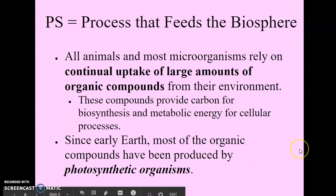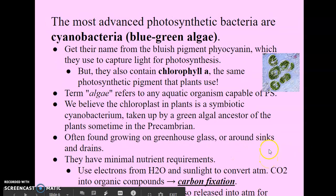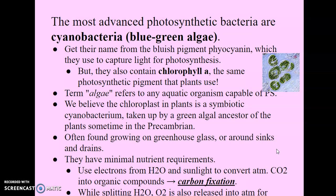Photosynthesis also occurs in algae, which are unicellular prokaryotes. One of the most advanced photosynthetic bacteria are cyanobacteria, which stands for blue-green algae. They get their name from the bluish pigment they use to capture light for photosynthesis, called phycocyanin. But they also contain chlorophyll A, which is the same photosynthetic pigment that plants use, and that's one reason why cyanobacteria is so important today. The term algae refers to any type of aquatic organism capable of photosynthesis.